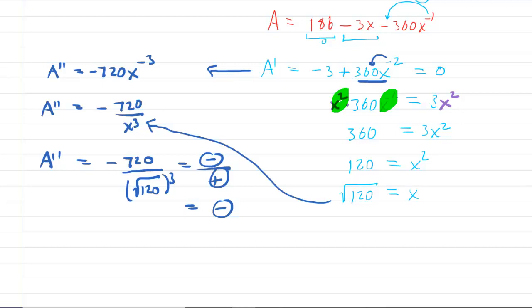And what that tells us is that at this value of X, because the second derivative was negative, we have a curve that is concave down. That's what a negative second derivative means, concave down. And therefore we would indeed have a maximum value at X equals square root of 120.